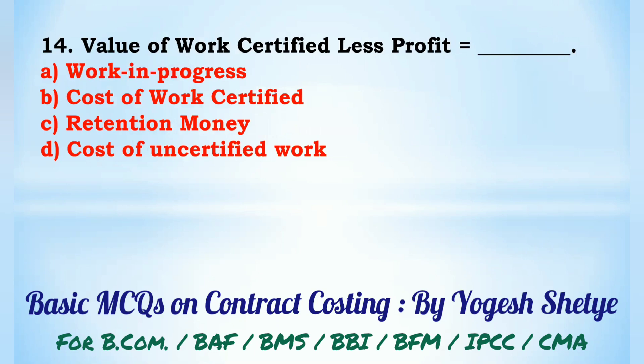Question 14: Value of work certified less profit is equal to — (A) work in progress, (B) cost of work certified, (C) retention money, (D) cost of uncertified work. Value of work certified less profit is equal to cost of work certified. Answer: B.